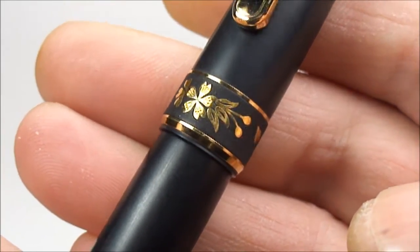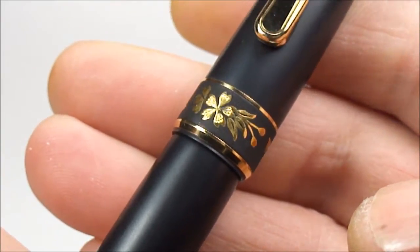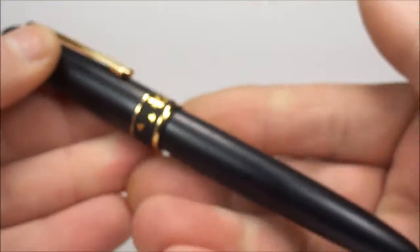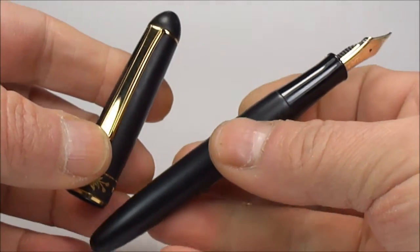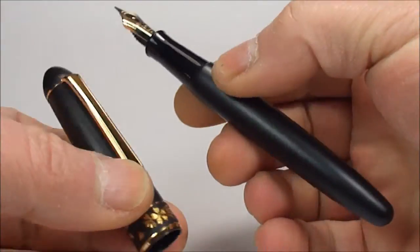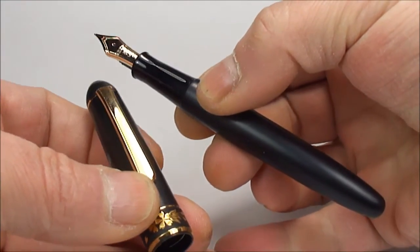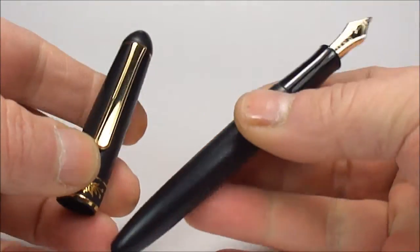So that's basically the cap band there, as you can see, absolutely stunning. Now if we actually take the cap off for you, like so, which is a slip cap, and just give you a couple of twirls of the pen.